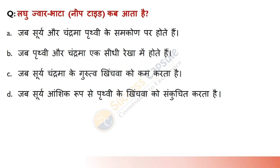When does the neap tide occur? Answer is A — when the Sun and Moon are at right angles to each other relative to Earth. It occurs seven days after the spring tide. The prominent point is that the Sun and Moon are at right angles in a neap tide.